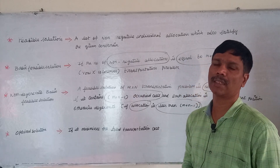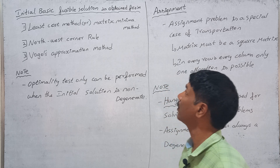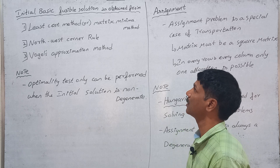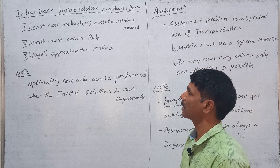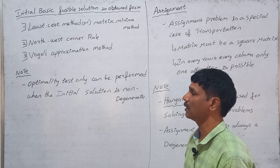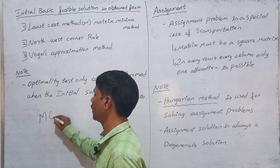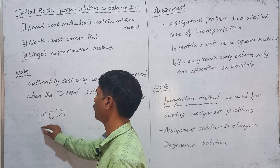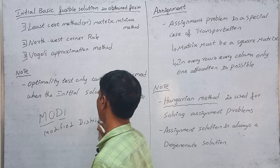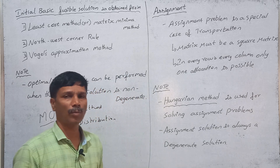The goal is to minimize the total transportation cost. For the initial basic feasible solution of a transportation problem, there are several methods: the Least Cost Method (also called the Matrix Minimum Method), the North-West Corner Rule, and Vogel's Approximation Method. Among these, Vogel's Approximation Method gives the best initial solution. Note that the optimality test can only be performed when the initial solution is non-degenerate.